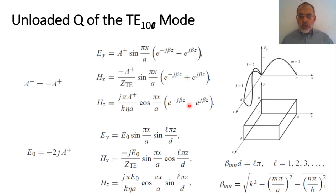Since β·D = Lπ, we can replace β by Lπ/D. In this case, the total electric field EY becomes E₀ = −2j·A⁺ multiplied by sin(πx/a) multiplied by sin(Lπz/D), where Lπ/D is the value of beta.